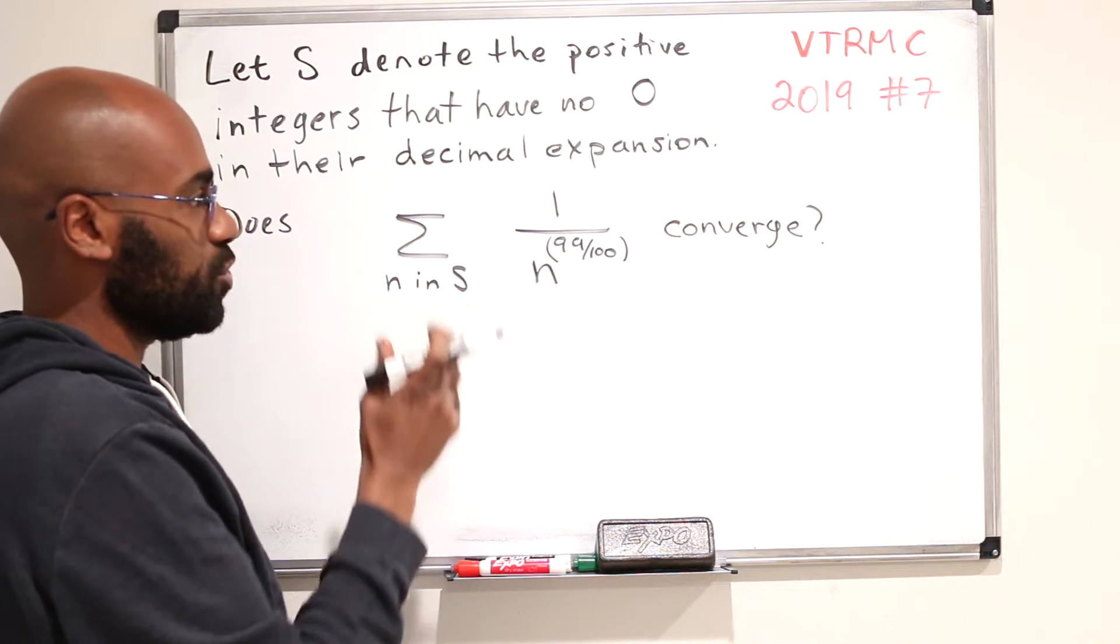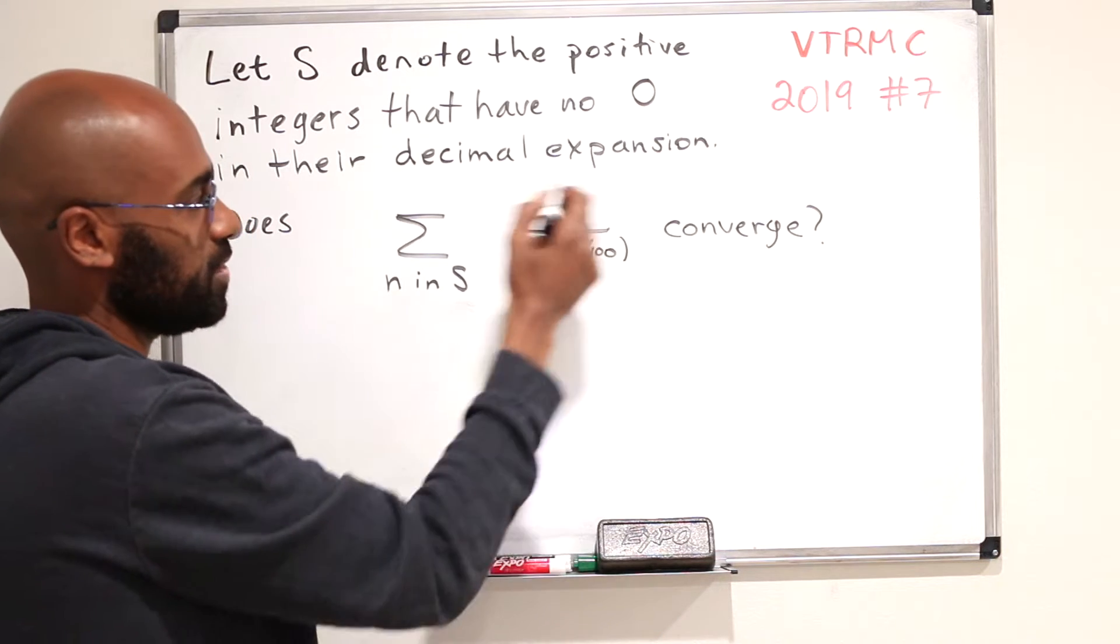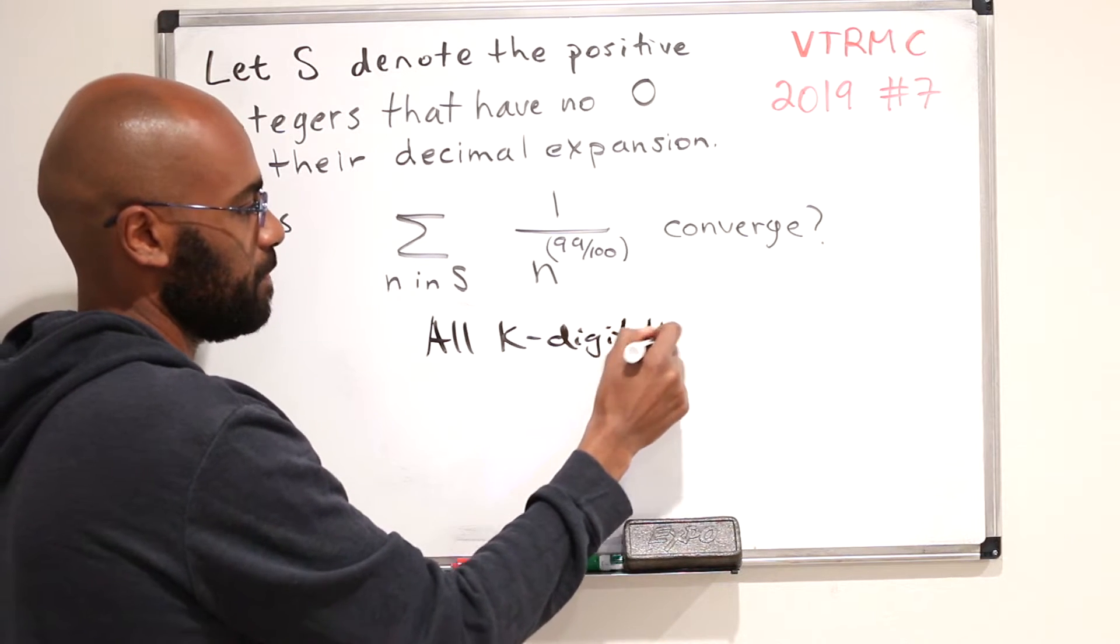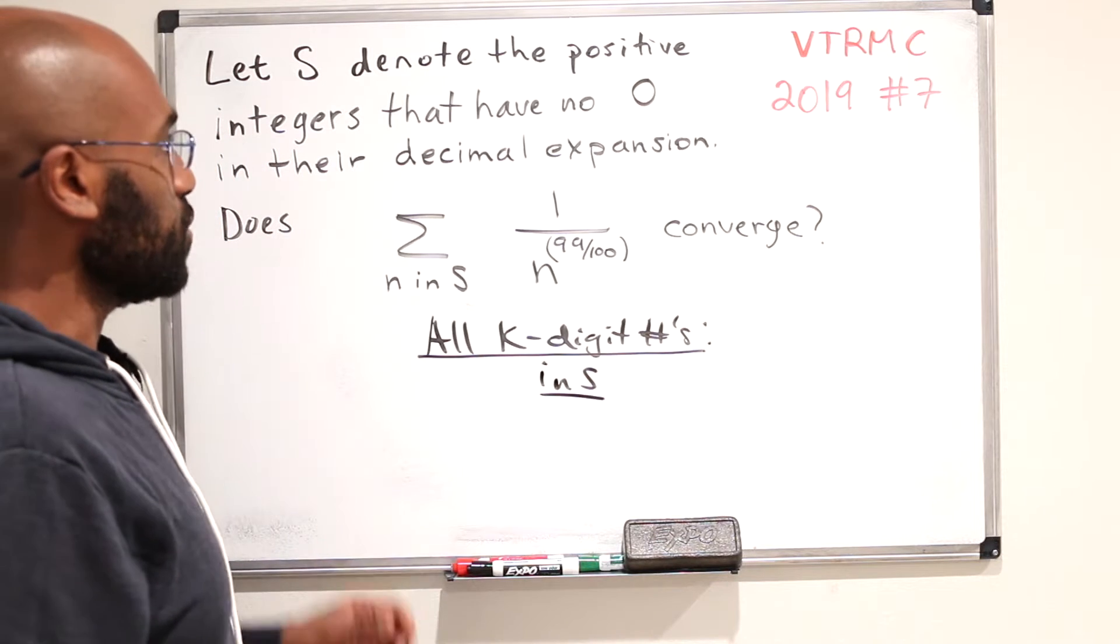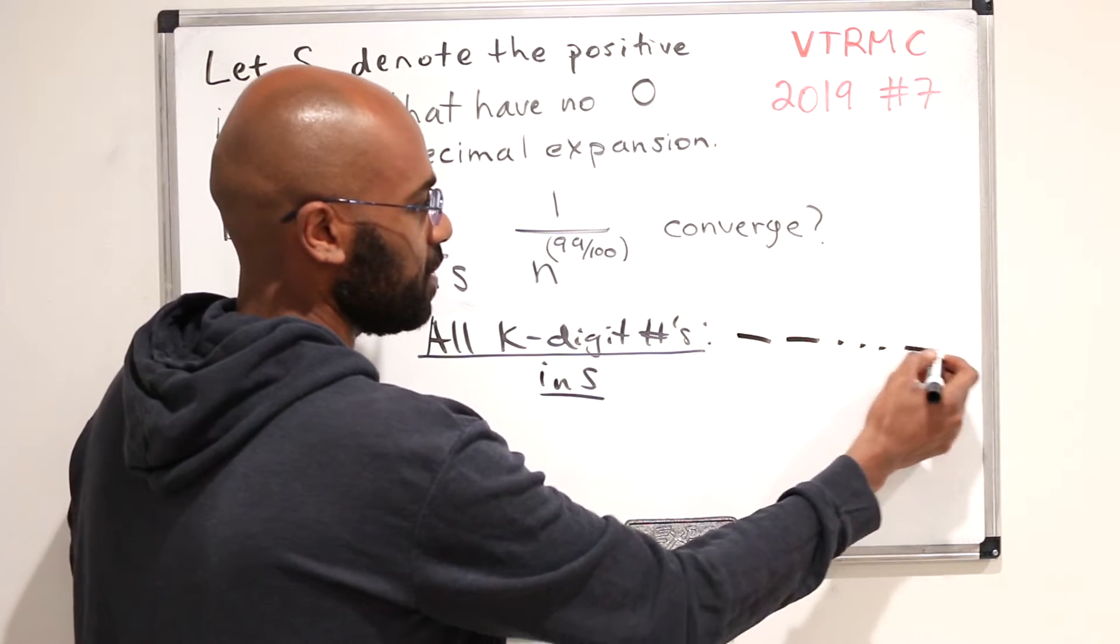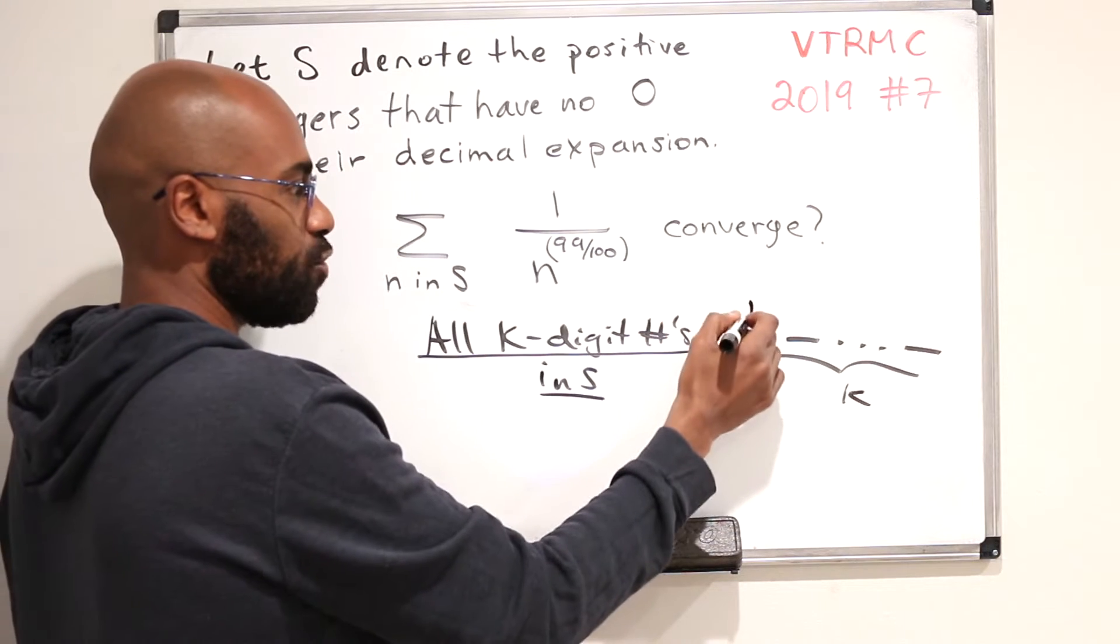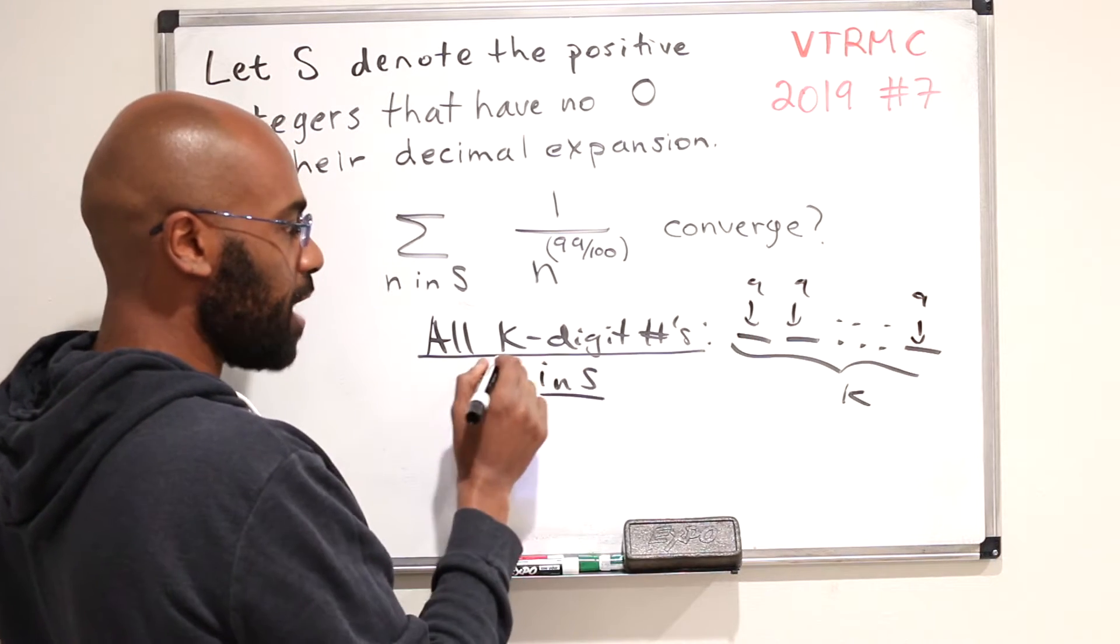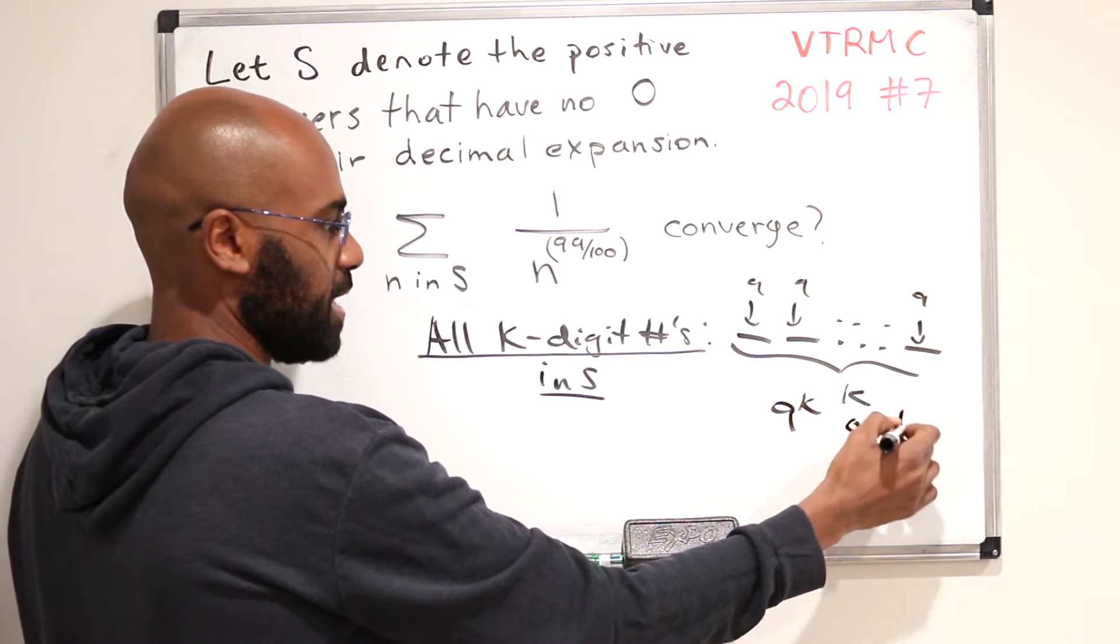One thing we could do is block the actual numbers we're dealing with in this set into chunks to make estimates on this number. So one natural way to chunk is to look at all k-digit numbers. So like one-digit numbers, or two-digit numbers, three-digit numbers, etc. in S. First of all, how many of them are there? The number of k-digit numbers in S. We have k things to fill here, and each of the digits has to be between one and nine because we're not allowed to have a zero. So there's nine choices for each digit, independent of each other. So the total number of digits in this clump is nine to the k.